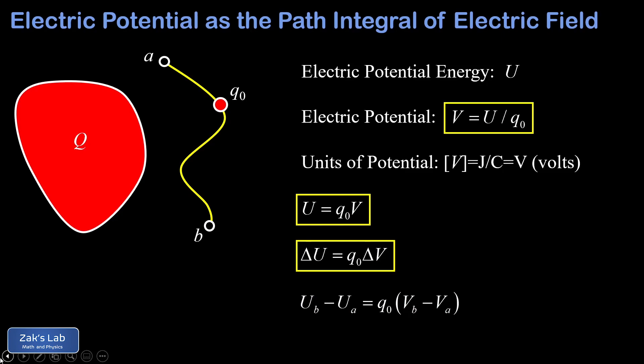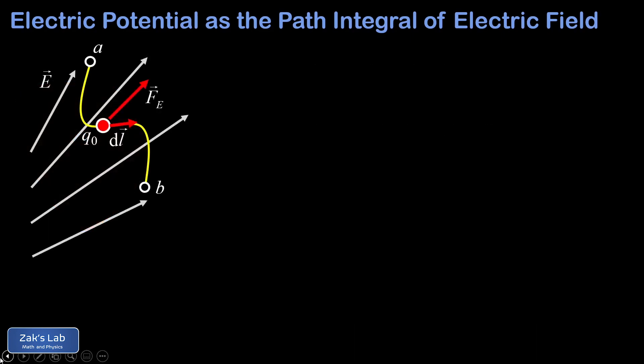The main subject of this video is learning how to calculate potential differences in the case where we already know the electric field around a charge distribution. We set ourselves up with a given electric field and a charge moving from one point to another within that field. The goal is to find the potential difference as the test charge travels from A to B. We start with the basic definition of potential energy, where we view it as a bookkeeping tool to account for the work done by a conservative force — the electric force in this case. The work done by the electric force is given by the path integral of the electric force dotted into dL from the starting to finishing positions.